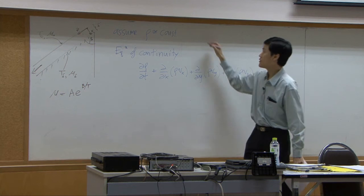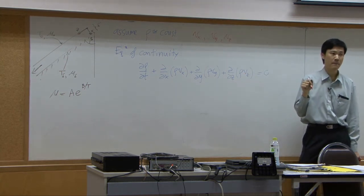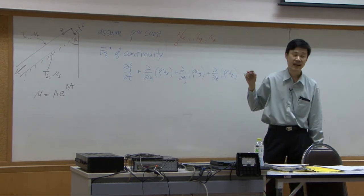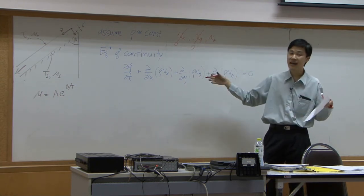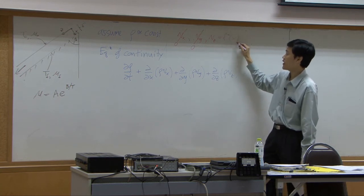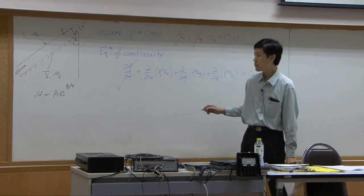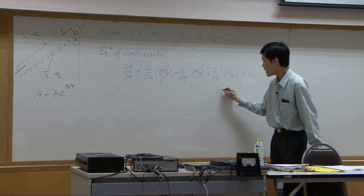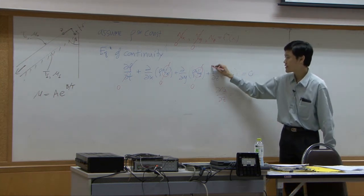In our problem we have Vx, Vy, and Vz. Vx is zero if we neglect natural convection; Vy is zero as long as the plane is large enough to neglect edge effects; and Vz is a function of x only. Under steady state, applying continuity with constant density, we end up with dVz/dz equal to zero.